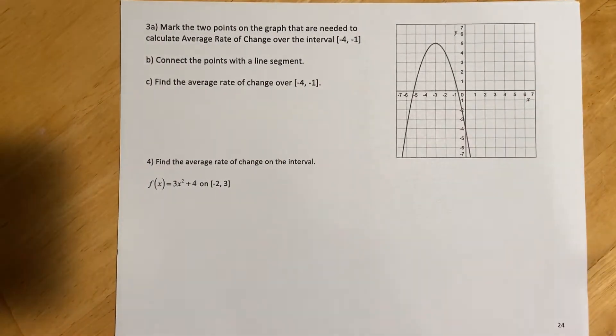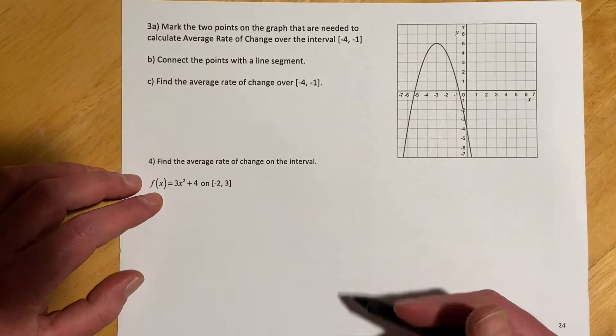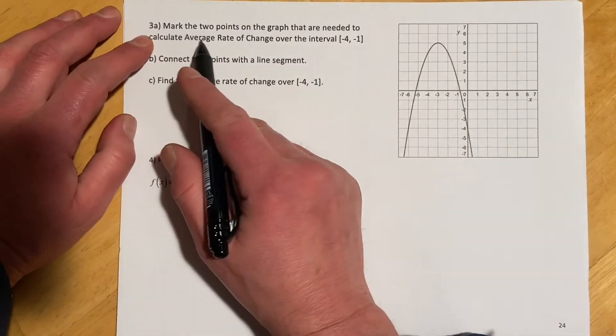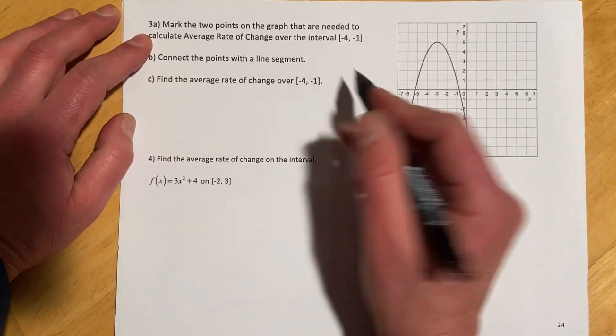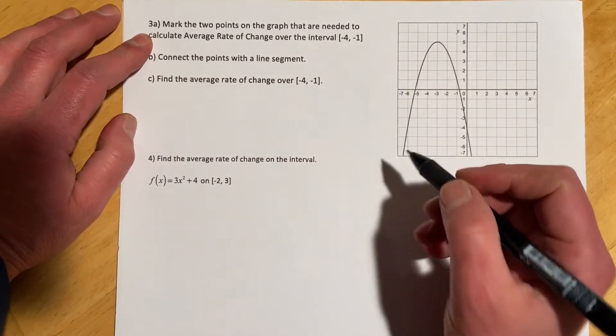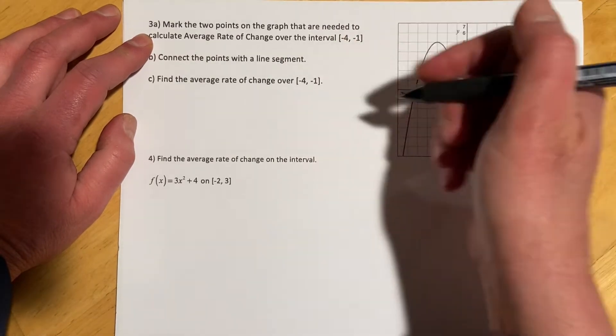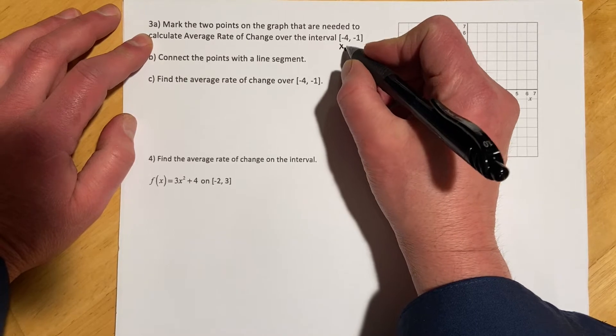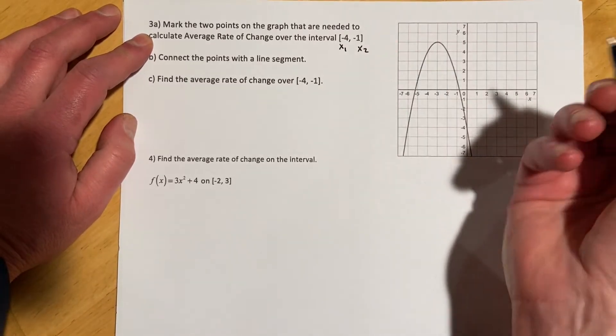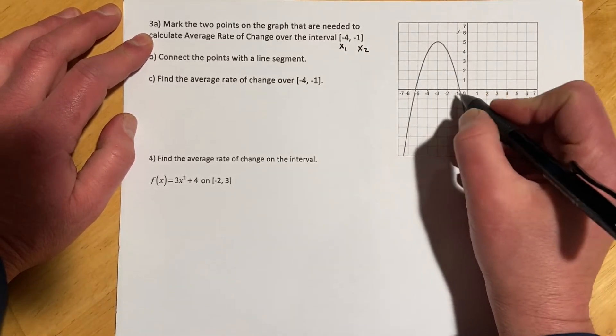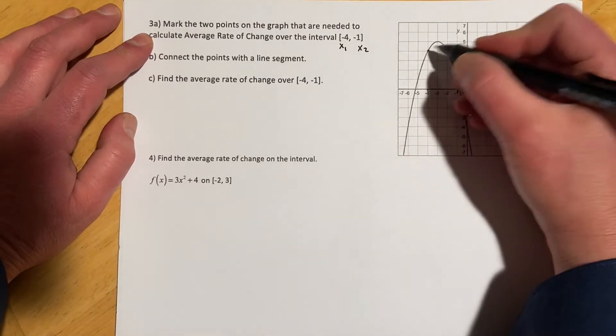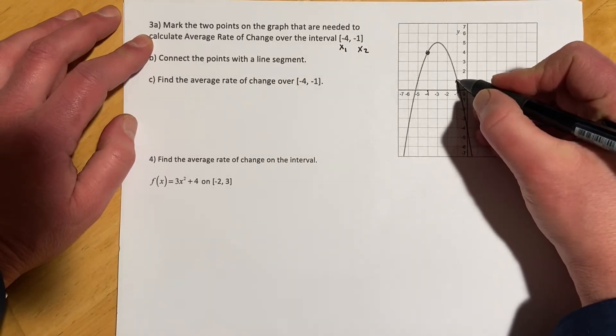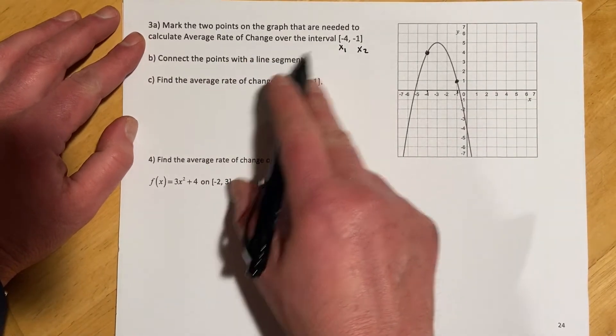Let's see what that looks like both graphically and more analytically. For this question, mark the two points in the graph that are needed to calculate the average rate of change over the interval negative four to negative one. So this is an interval - these are both x values. The first x is negative four and the second x is negative one. So from here to here is where we're calculating the average rate of change. We would be going from this point down to this point.